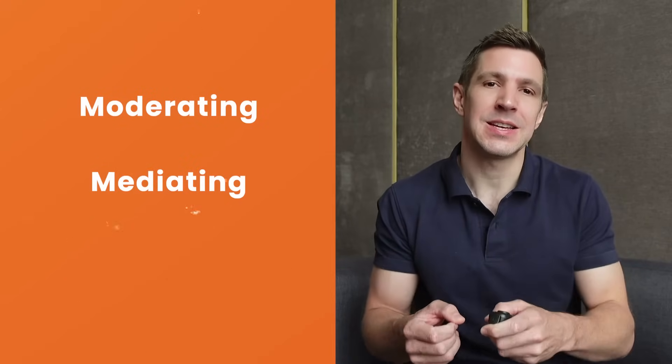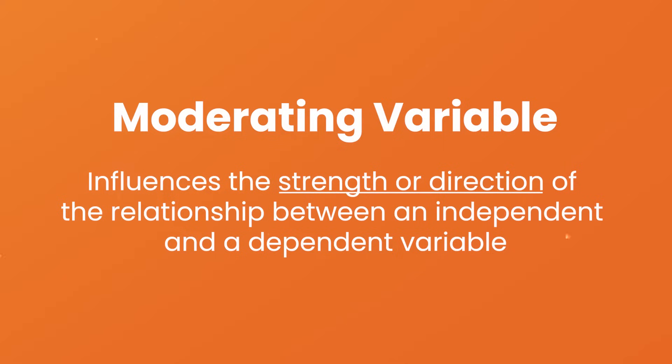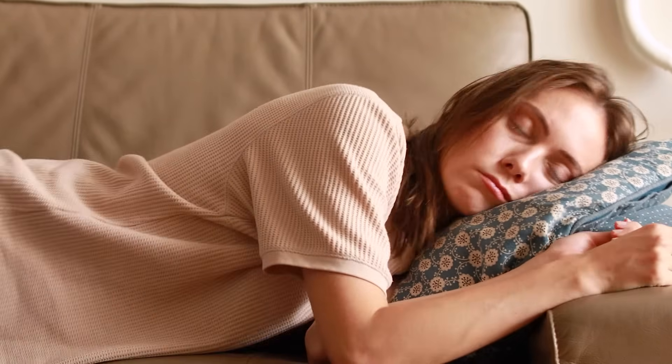Now that we've looked at the big three types of variables, let's unpack some other types you'll likely encounter — specifically moderating, mediating, and confounding variables. A moderating variable influences the strength or direction of the relationship between an independent and dependent variable. In other words, it affects how much or in what way one variable affects another. For example, in a study investigating the impact of sleep deprivation on cognitive performance, age could be a moderating variable — younger people may be less severely impacted by a lack of sleep than older people, or vice versa. Similarly, a person's sex or other physical attributes could play a moderating role.